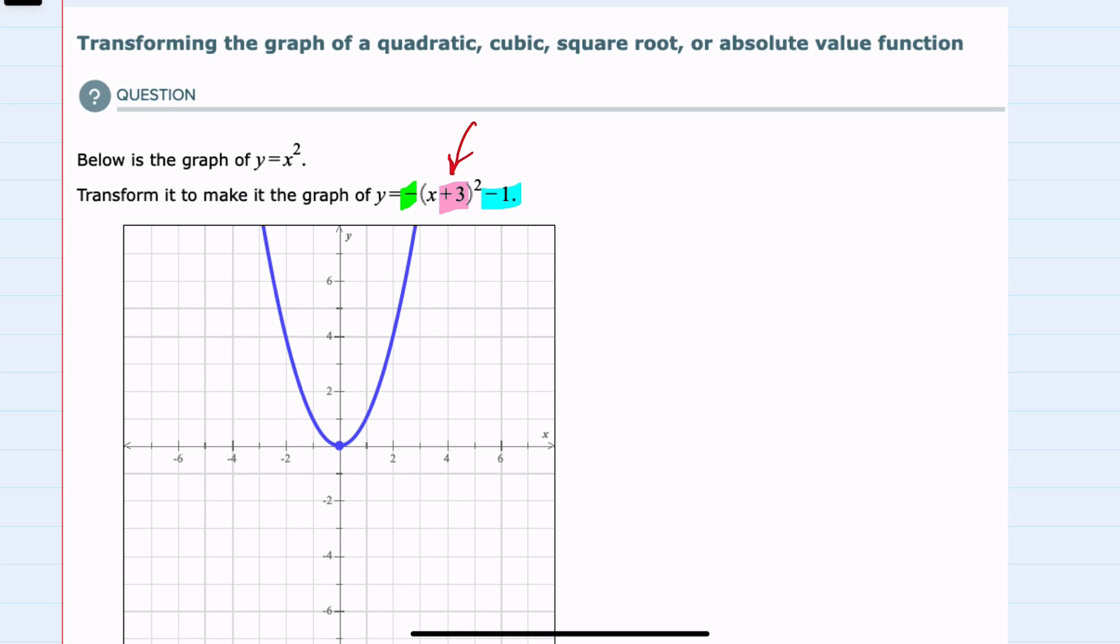Starting with the plus 3, we know that replacing the x with an x plus 3 has the effect of shifting our graph to the left three units, so our graph would be something like this.